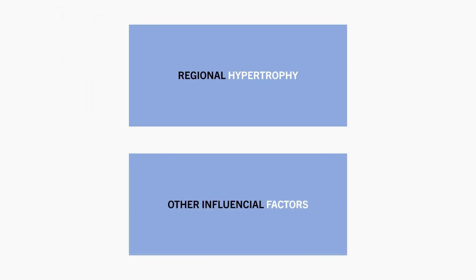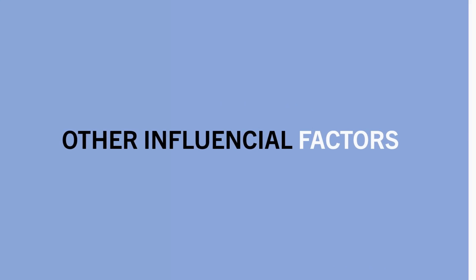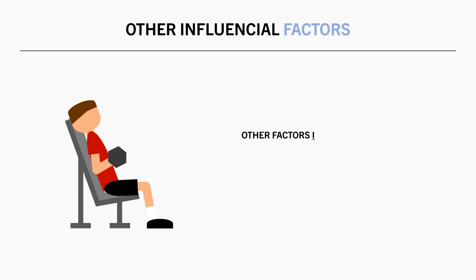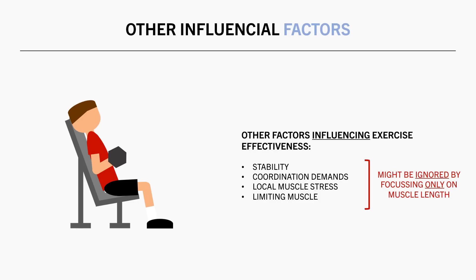Another potential issue with putting too much attention on long muscle length training is that there are many other factors also at play rather than just muscle length — factors such as stability, coordination demands, local muscle stress, which muscle is the limiter of the set, and so on. All of these are important considerations for the effectiveness of an exercise. So selecting the exercise which places the target muscle in the most lengthened position might not always be the most effective exercise if it sacrifices some of these other important considerations.